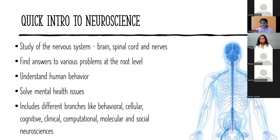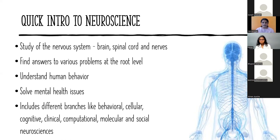We can also understand human behavior — what we do and why we do it is all because of neuroscience. We get to solve mental health issues like depression, anxiety, amnesia, Parkinson's, schizophrenia — all of those can be addressed through neuroscience. There are different branches: behavioral neuroscience, cellular neuroscience, cognitive, clinical, computational — where AI is used to model the human brain artificially — and molecular and social neuroscience.